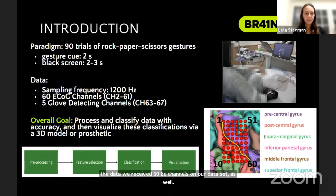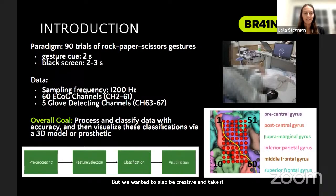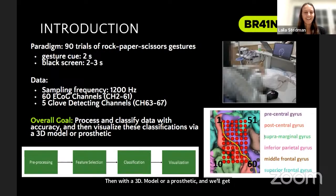With this data, our overall goal was to process and classify the data with as high accuracy as we could. But we also wanted to be creative and take it one step further — we wanted to see if we could visualize these classifications with a 3D model or a prosthetic. We'll get into that a bit later, which actually links into our robotic reference and our team name, Terminators.